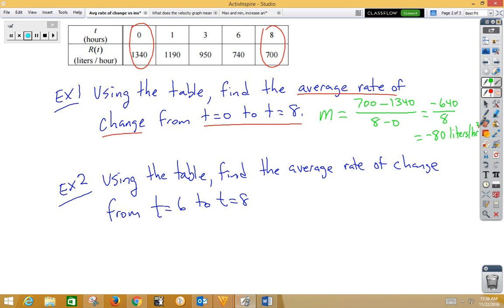Let's look at example two. Using the table, find the average rate of change from six to eight. Now we're going to be using six comma seven hundred forty and eight comma seven hundred. Our slope would be seven hundred minus seven forty over eight minus six. That would be negative forty over two or negative twenty liters per hour per hour.